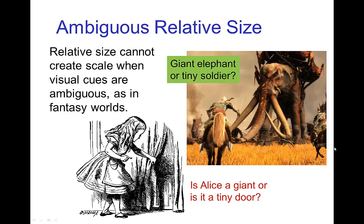This challenge of establishing scale from relative size is especially difficult when you have fantasy worlds. In a fantasy world, there's often ambiguity in terms of whether something is very large or very small. In this image from Lord of the Rings, either the elephant is huge and the soldiers are ordinary size, or the elephant is ordinary size and they're tiny soldiers — and because it's a fantasy world, it could be either one.